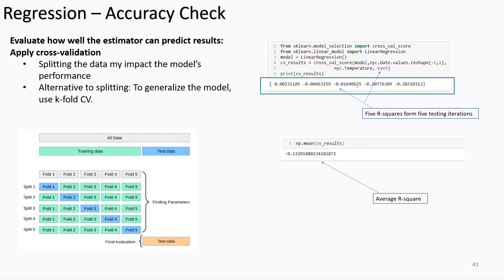In cross validation, each fold will be used as a testing set on the trained model iteratively until every fold has served as both a train and test set, and the average R-squared is used as the accuracy check. In the case study, cross_val_score is imported in line one, LinearRegression in line two, the object is instantiated to 'model' in line three, and line four calls cross_val_score with the model, feature data, target data, and cv=5, meaning five iterations producing five R-squared values that are averaged for a more accurate result.